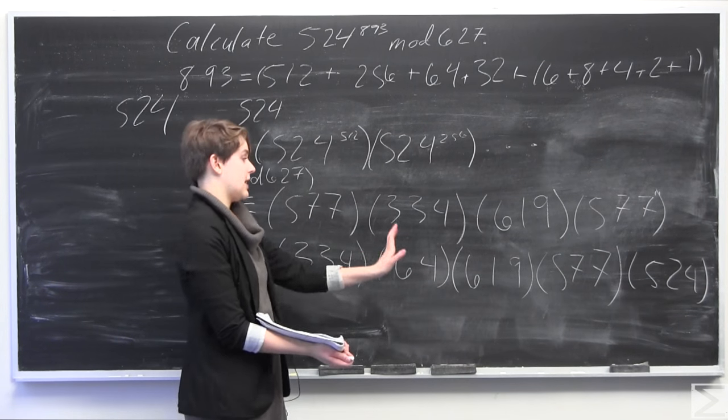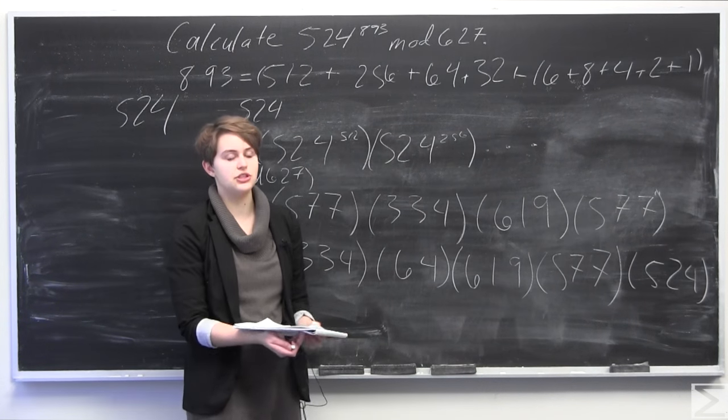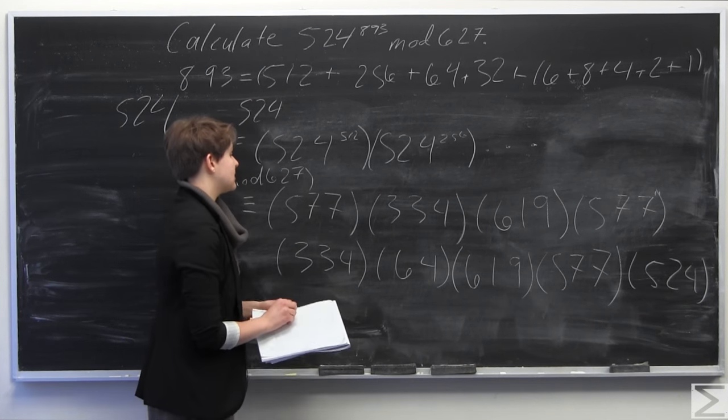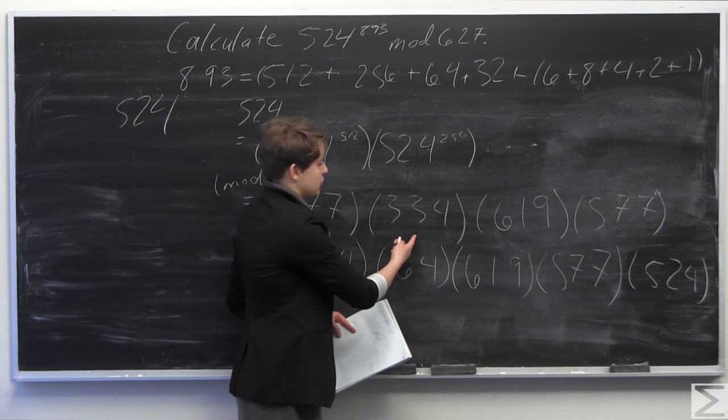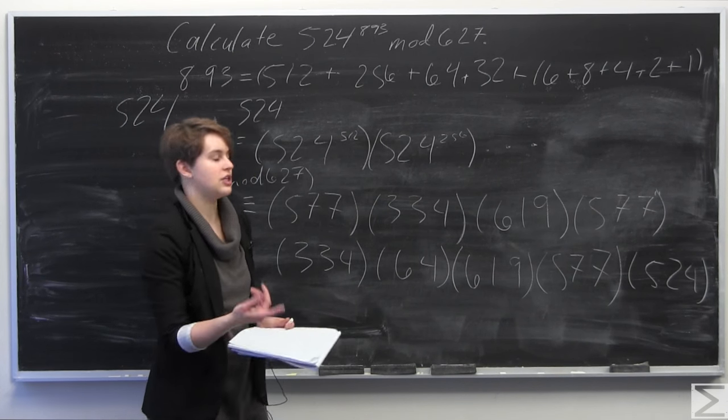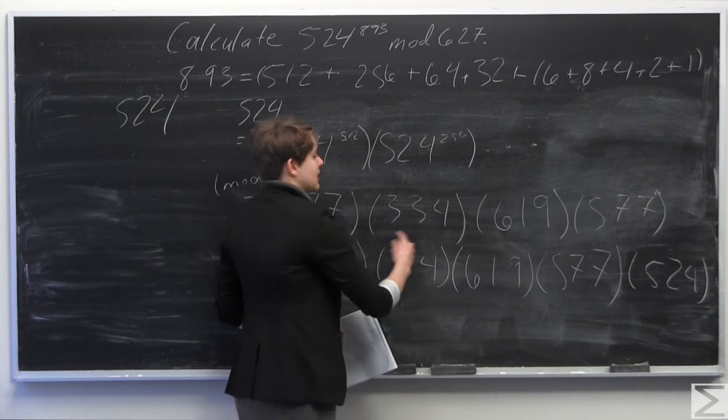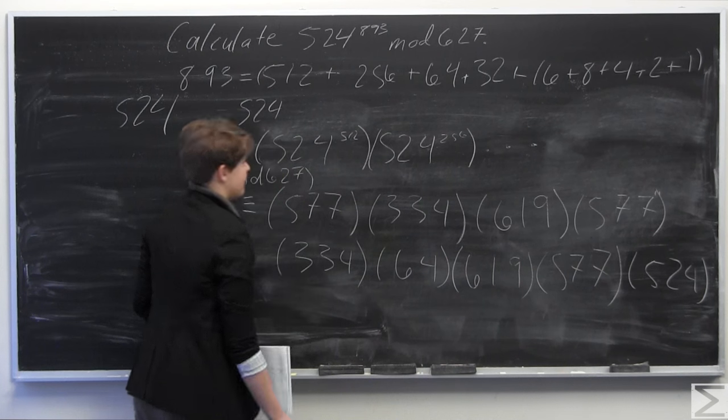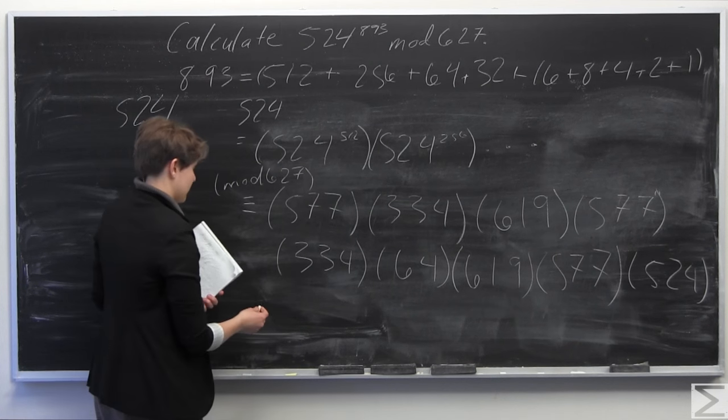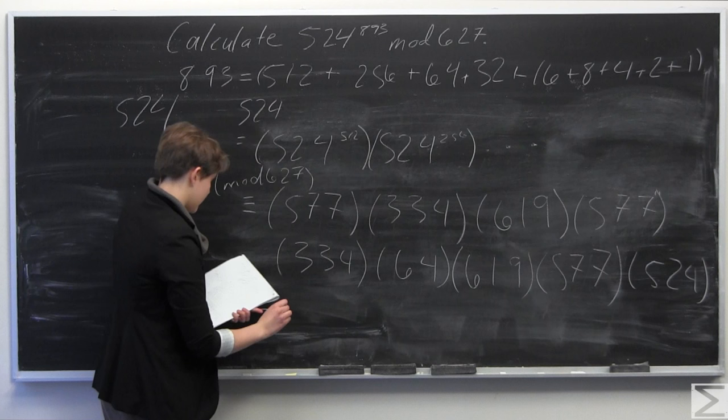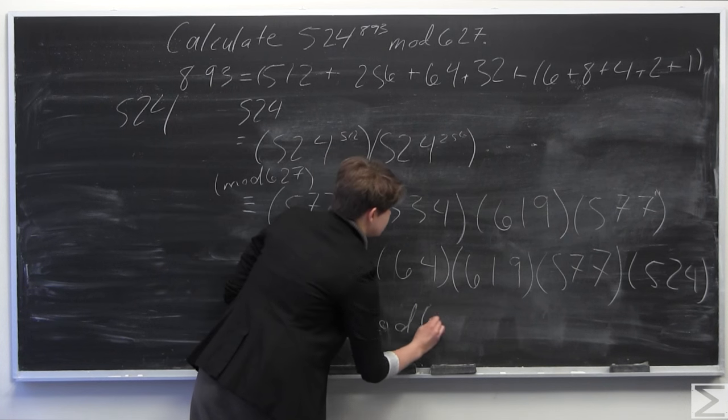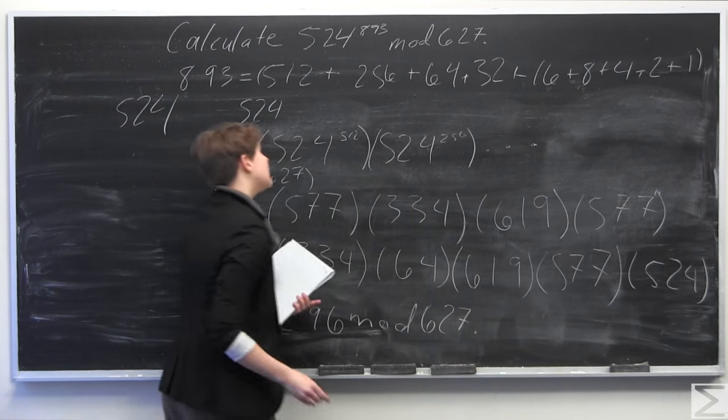So now, I'm not going to go through step by step by step, but what you would do here is you would follow the same procedure that you did before to calculate the powers of 2 under the modulus of 627. So what I mean by that is, for example, you would multiply 577 times 334. You would divide that number by 627, subtract off the whole number, and multiply by 627 to get what is congruent to under the modulus of 627. So you repeat that for all of these numbers here. Until you get to the very end, you should get some number between 0 and 626 because of the properties of modular arithmetic. And so you'll get in the end that your final answer is congruent to 296 mod 627. So that is going to be your final answer.